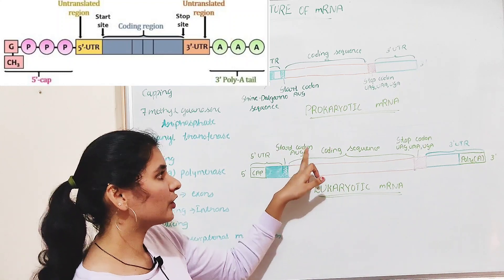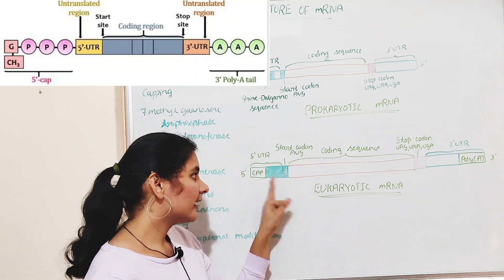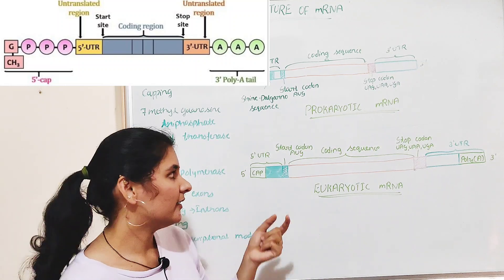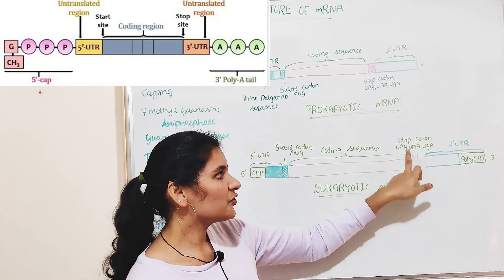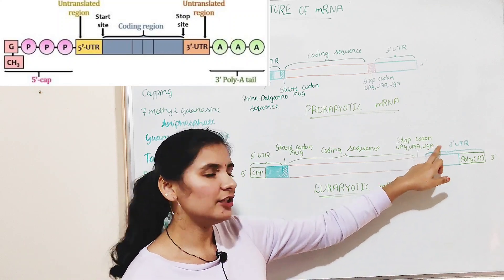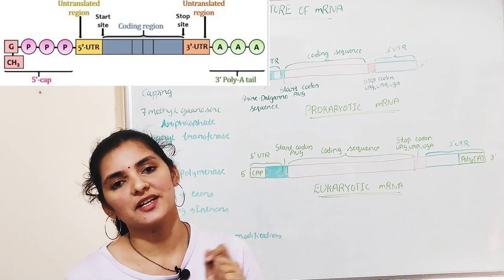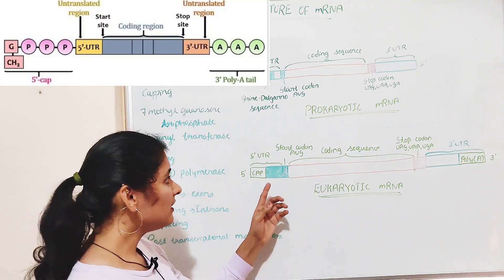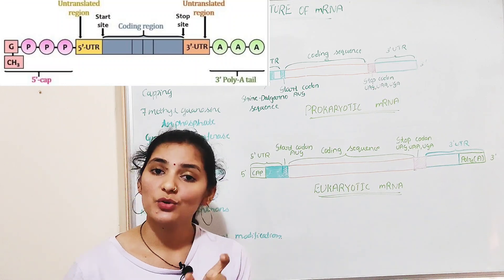Following the 5' UTR region is the coding sequence, which is a very important region because it consists of codons that code for amino acids. The coding sequence begins at the start codon — the AUG codon — and it is at this point that translation or protein synthesis begins. The coding sequence ends with the stop codon: UAG, UAA, and UGA, where termination of translation takes place.